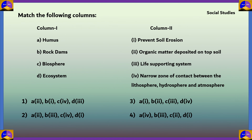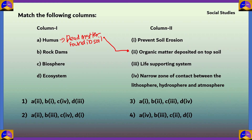Next question on social studies: match the following columns. In column 1, humus is dead matter found in soil — the nearest match is option 2: organic matter deposited on topsoil. So A matches with 2. This lets us cancel options 3 and 4 immediately, as they incorrectly pair A with 1 and 4 respectively.